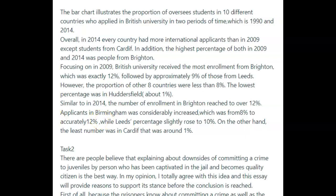Similar to 2014 — not 'similar to in 2014,' but 'similar to 2014' — be careful with the word 'number' here. We're not talking about numbers. Since everything is in percentages, you can either use the word 'percent' with a number in front of it, use the word 'percentage' on its own with no number, or a nice catch-all is the word 'figure.' So: 'similar to 2014, the figure for enrollment in Brighton reached over 12%. Applicants to Birmingham considerably increased from 8% to 12%, while Leeds' percentage slightly rose to 10%. On the other hand, the lowest figure was in Cardiff, with around 1%.'